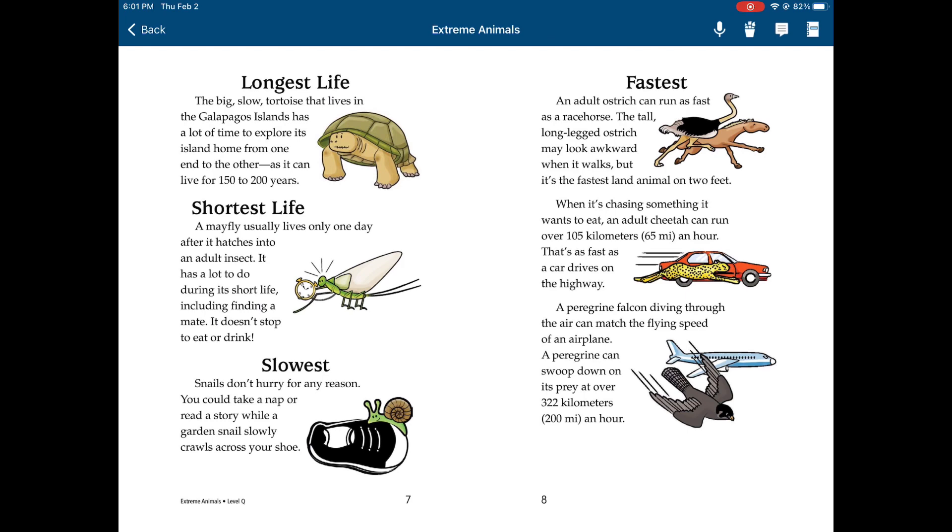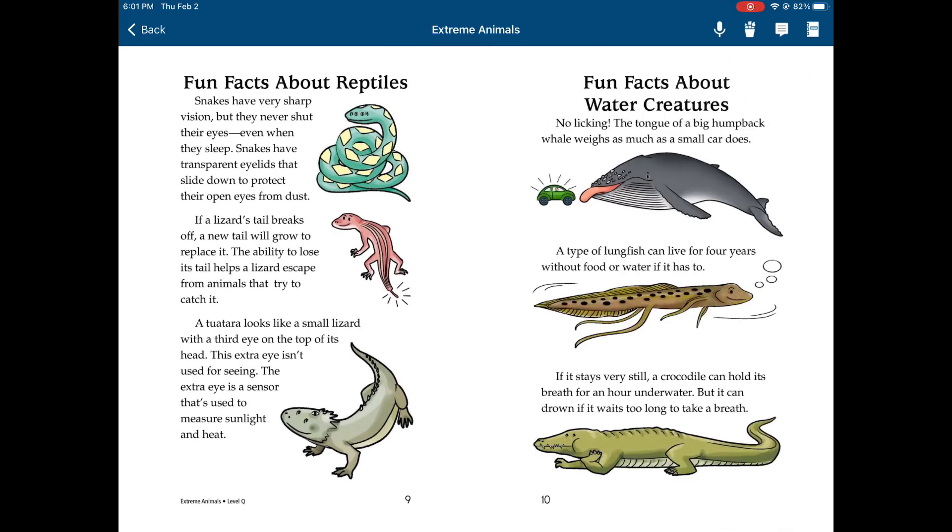Fun facts about reptiles. Snakes have very sharp vision, but they never shut their eyes, even when they sleep. Snakes have transparent eyelids that slide down to protect their open eyes from dust. If a lizard's tail breaks off, a new tail will grow to replace it. The ability to lose its tail helps a lizard escape from animals trying to catch it. A tuatara looks like a small lizard with a third eye on the top of its head. This astral eye isn't used for seeing. The astral eye is a sensor that's used to measure sunlight and heat.